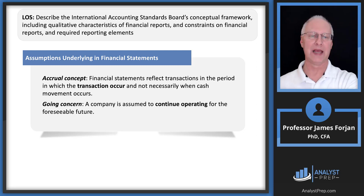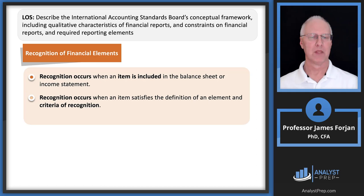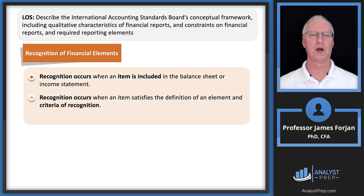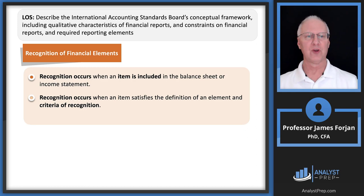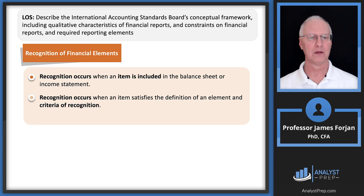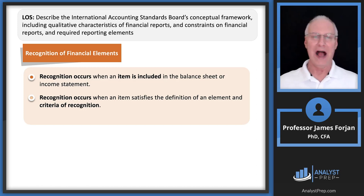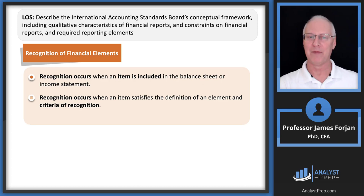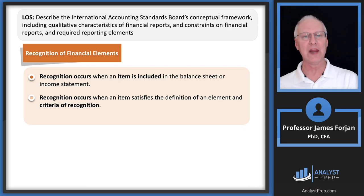Recognition occurs when an item is included on the balance sheet or the income statement. For example, suppose I'm Jim's construction company and you've hired me to build a $50 million bridge, paying me upfront before I do any work. I have to recognize that as a liability — I still owe you the bridge. I don't want to recognize it as revenue because that would be completely misleading. So it goes on the balance sheet as a liability, not on the income statement as revenue, until the work is actually performed.